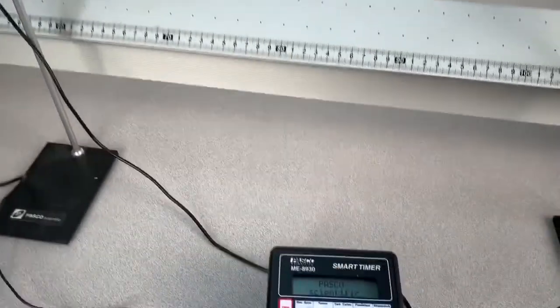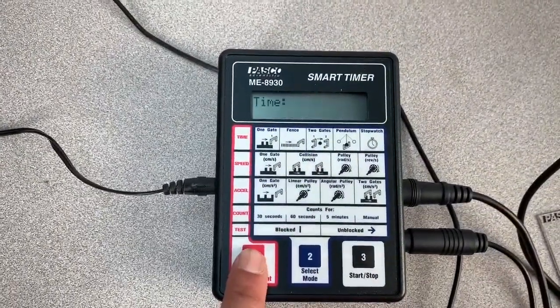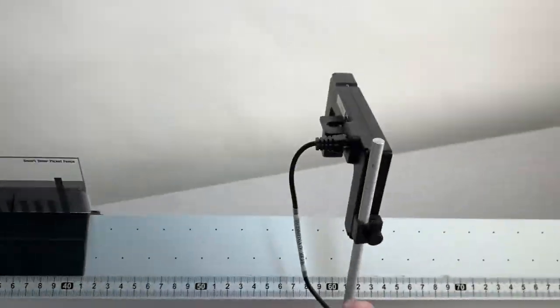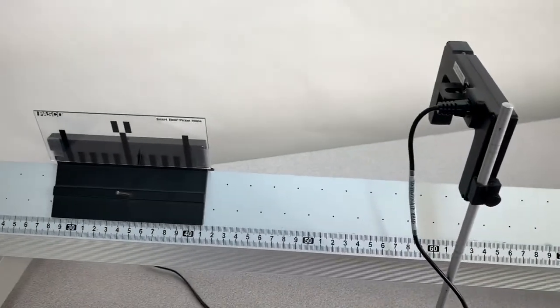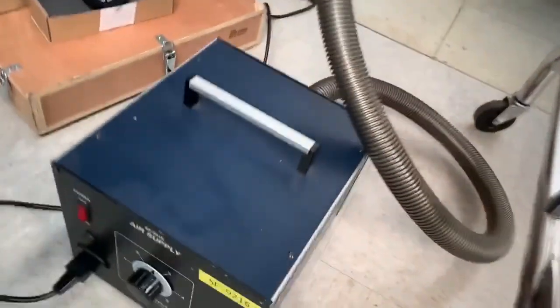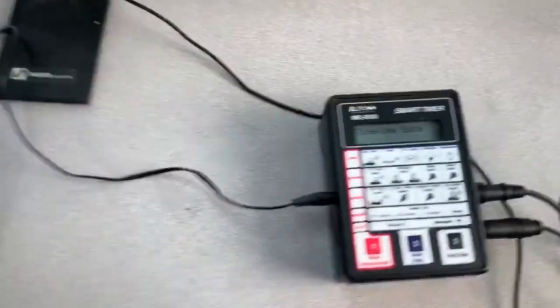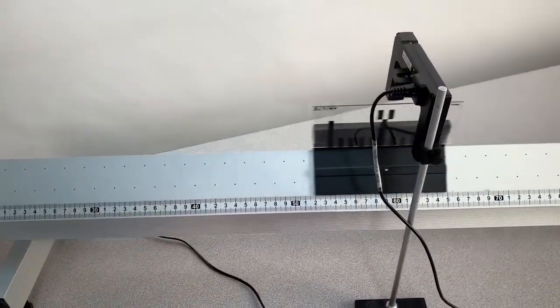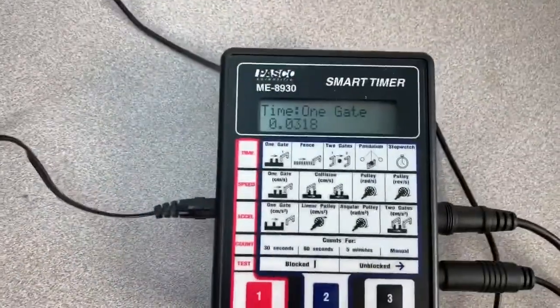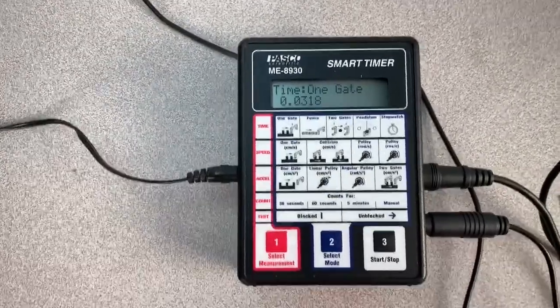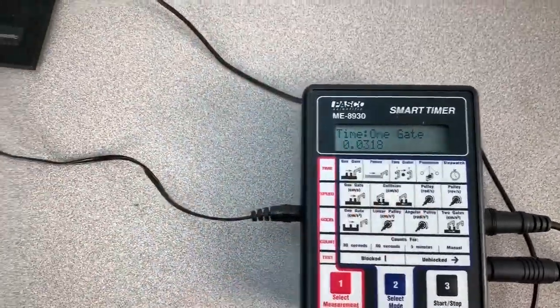The first mode, I'm going to select the time measurement and the one gate mode. What that's going to do is it's going to use this photogate to determine how long it takes to go from the start of one to the start of the next. So I'll turn on my air supply here. I'll press the start button and I'll just push this through. Took 0.0318 seconds and the distance between those two flags is one centimeter so you can do one centimeter divided by this to give us our speed.